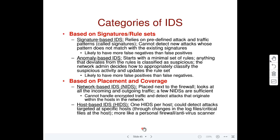The network-based IDS runs in promiscuous mode and is placed next to the firewall, looking at all incoming and outgoing traffic. One network-based IDS may not be sufficient for a very large network — you may need a few, but not as many as host-based IDS on every host. They need to coordinate, exchanging rules and classifications to collectively determine whether traffic is attack traffic.